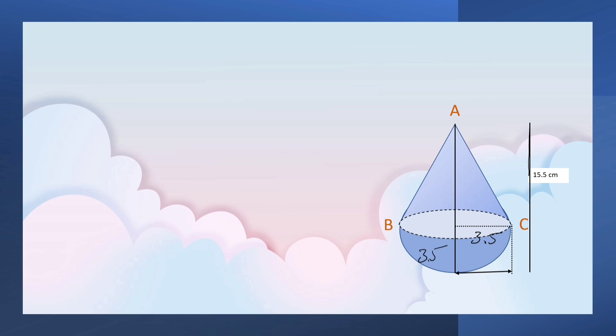Here, we are given total height and we have just found out the radius. So we can find out height of the cone now. Height of the cone is equal to total height, that is 15.5 minus radius, that is 3.5. So height of the cone is equal to 12 cm.